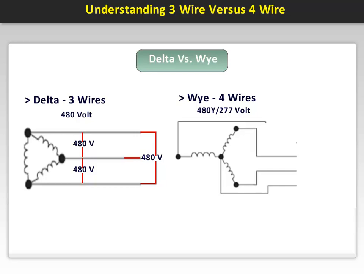As with the delta configuration, any phase-to-phase, such as A and B, B and C, and A and C, equate to 480 volts single-phase, and A, B, and C equals 480 volts three-phase.